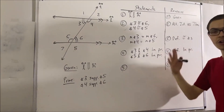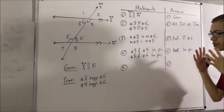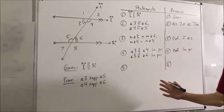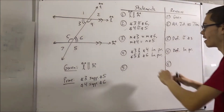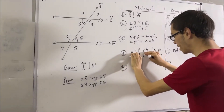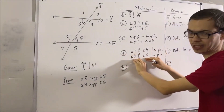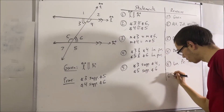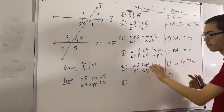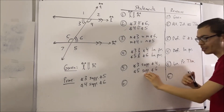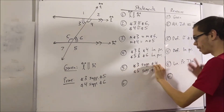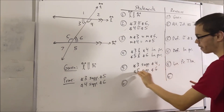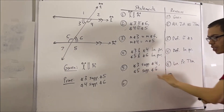By the linear pair theorem, if two angles form a linear pair, then those angles are supplementary. So we know that angle 3 and angle 4 are supplementary, and angle 5 and angle 6 are supplementary. By the definition of supplementary angles, the measure of angle 3 plus the measure of angle 4 equals 180 degrees, and the measure of angle 5 plus the measure of angle 6 equals 180 degrees.